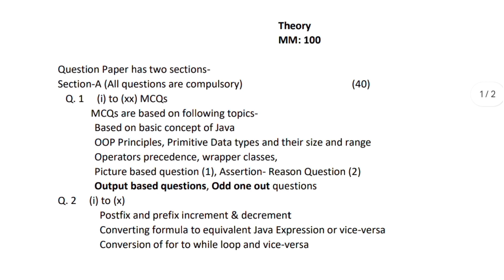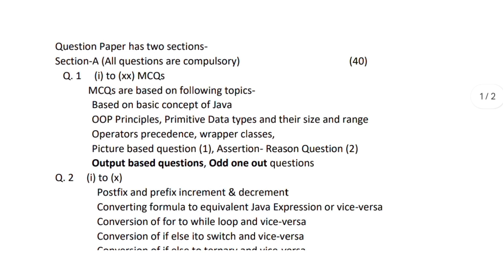There are some changes by the council in the pattern of the paper. The question paper has two sections: Section A and Section B. Section A is of 40 marks where all questions are compulsory. There are two questions in Section A — Question 1 and Question 2. In Question 1, there will be 20 sub-questions, all of which are multiple choice questions.